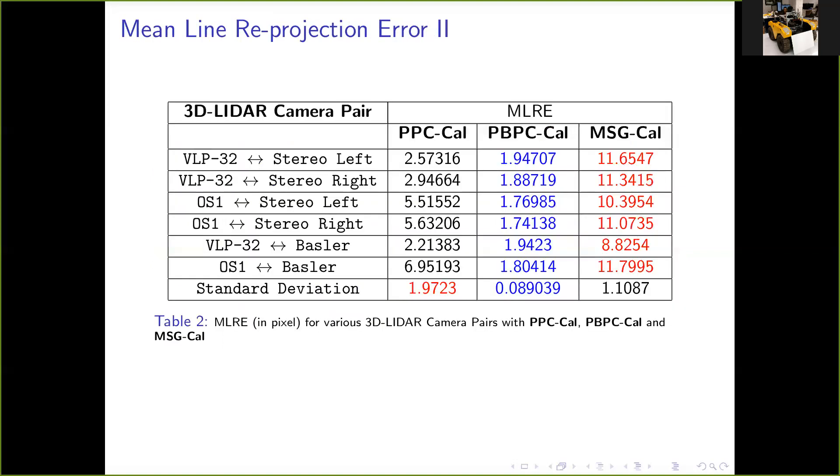Figure 3 and Table 2 present the mean line reprojection errors for all the LIDAR camera pairs and they present the results from the same scenario. So here we focus on the table because comparing the numbers here is easier. Clearly, PBPC-Cal performs best. PBPC-Cal is also more consistent for all the camera LIDAR pairs as evident from a low standard deviation. PPC-Cal shows deterioration in performance when used on an Ouster LIDAR camera setup. MSG-Cal performs worse here.